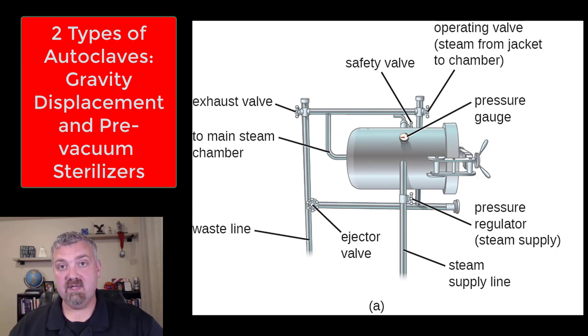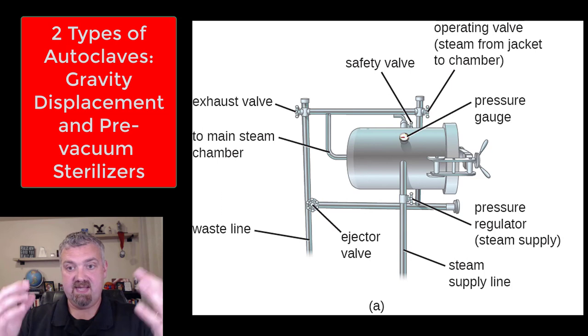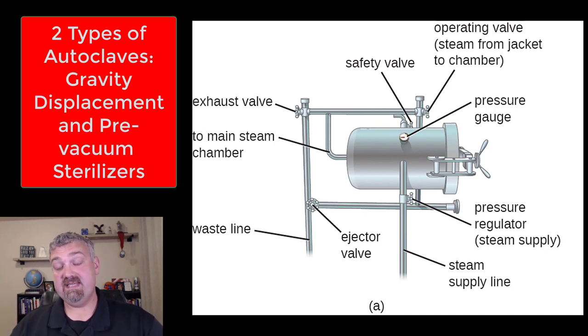There's the gravity displacement autoclave, which is the one that we use in our lab, which means that steam is going to enter into this chamber. And as steam enters into the chamber it's going to force the air out. So that's why it's called gravity displacement. The air is going to be forced down and out of the chamber. Once all the air is gone, then basically the container will be sealed and now it's full of pressurized steam.